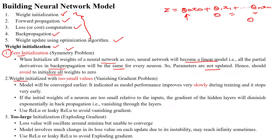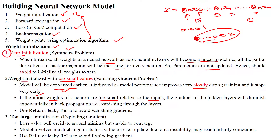Second, we can initialize weights with very small values like 0.001 or 0.0002. When applying very small values, the model will converge very early, meaning the performance of the model will improve very slowly during the training phase and stop early due to earlier convergence. If the weights of the neuron are too small relative to its inputs — for example, the input may be 15 but the weight is 0.0002 — it will impact the calculation relative to the inputs.